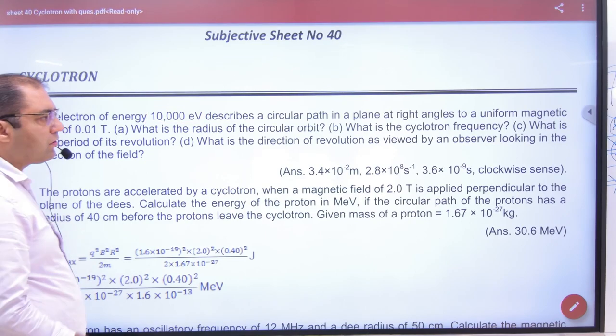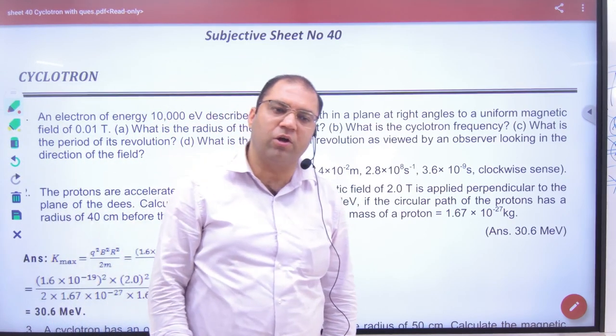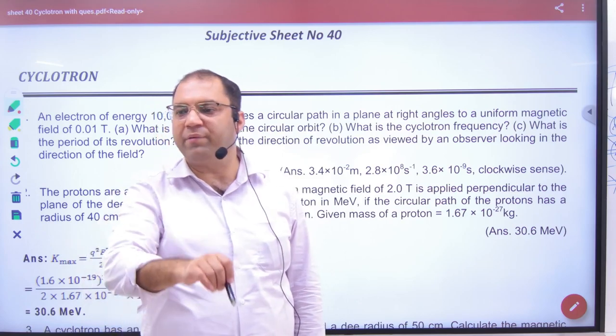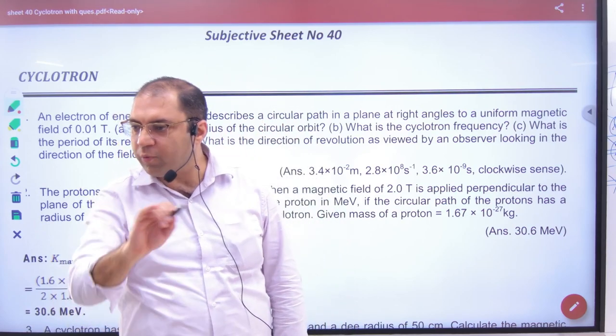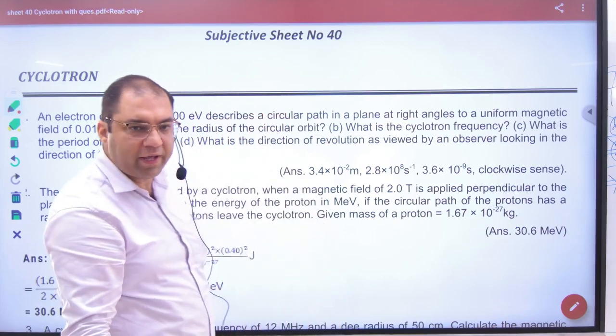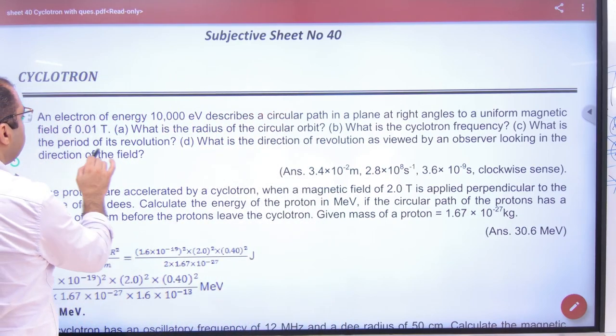Next is cyclotron frequency. What is the reciprocal of time period? What is the time period? 2πm by bq. So the frequency will be bq by 2πm.